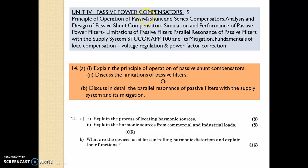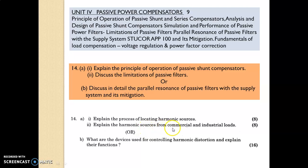Unit 4 is Passive Power Compensators. From the 2021 question paper: explain the principle of operation of passive shunt compensators; discuss the limitations of passive filters; discuss in detail the parallel resonance of passive filters with the supply system and its mitigation. From the 2017 question paper: explain the process of locating harmonic sources; explain harmonic sources from commercial and industrial loads; and describe devices used for controlling harmonic distortion and explain their functions.